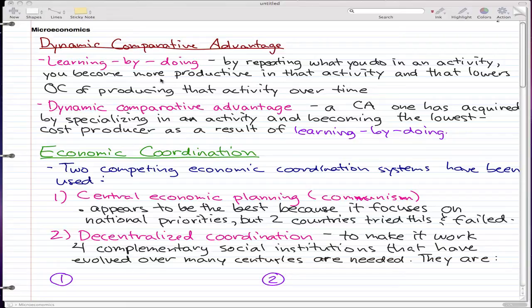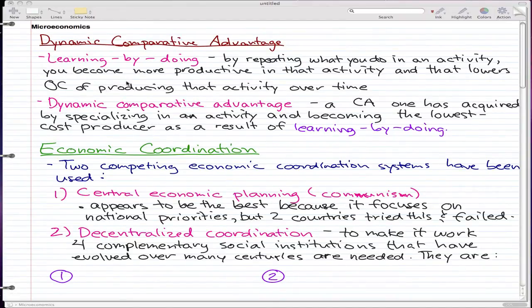For example, if you ever worked at McDonald's and you're producing burgers, you're repetitively making burgers, and you probably get better and better at it. On the first day, it'll probably take you a couple hours to make a burger, but by the end of the week, you're probably spouting out burgers by the second, and that's because you got better and you lowered your opportunity cost of producing burgers.